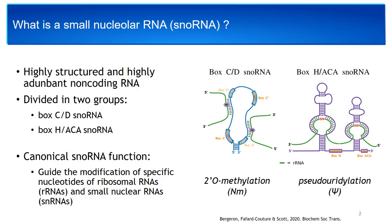So first of all, what is a small nucleolar RNA? It's a highly structured, highly abundant non-coding RNA, ranging in size from 60 to 300 nucleotides. snoRNAs are divided into two groups: box C/D snoRNA and box H/ACA snoRNA. The canonical function of snoRNA is to guide the modification of specific nucleotides of ribosomal RNAs and small nuclear RNAs. More precisely, the canonical function of box C/D snoRNA is to guide 2'-O methylation, while the canonical function of box H/ACA snoRNA is to guide pseudouridylation.